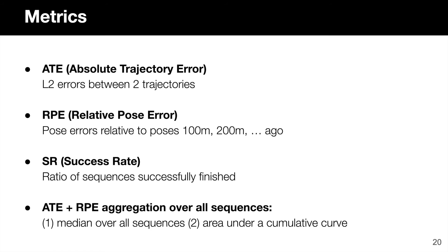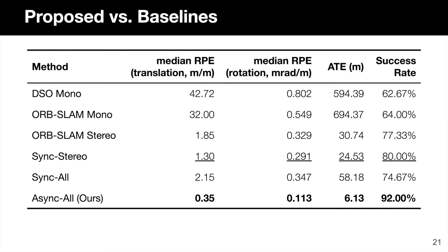We first compare our AMV SLAM system using all cameras with existing methods such as DSO, Orb SLAM, and Stereo Orb SLAM. We also compare with a baseline method that uses all cameras but incorrectly assumes that they all fire at the same time, which effectively corresponds to a direct multi-view generalization of Orb SLAM 2. Our results show that using all cameras and correctly modeling them as asynchronous outperforms all other methods by a significant margin. Bold numbers indicate the best result in a column, while the second best is underlined.